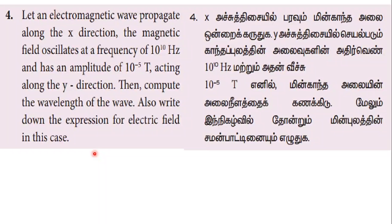So, an electromagnetic wave propagates along the x direction. The magnetic field oscillates at a frequency of 10^10 Hz and has an amplitude of 10^-5 Tesla.